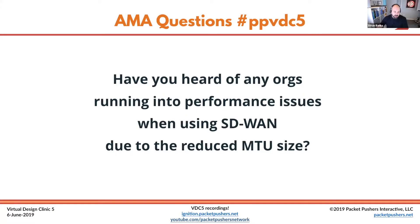Have you heard of any organizations running into performance issues when using SD-WAN due to the reduced MTU size? This is really the classic tunneling problem when you're adding tunnel overhead to a packet — you're doing an encapsulation and you can run into some challenges there. Chris, are you comfortable enough talking through this and explaining what this problem is? And then we can kind of dive in from there.